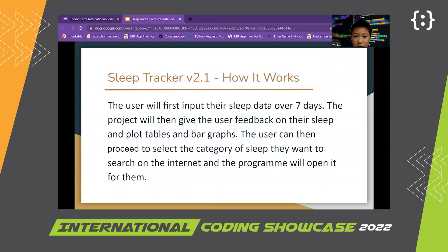This is how the project works. The user will first input their sleep data over 7 days. The project will then give the user feedback on their sleep and plot tables and bar graphs based on the data the user input. The user can then proceed to select the category of sleep they want to search on the internet, and the program will open it for them.